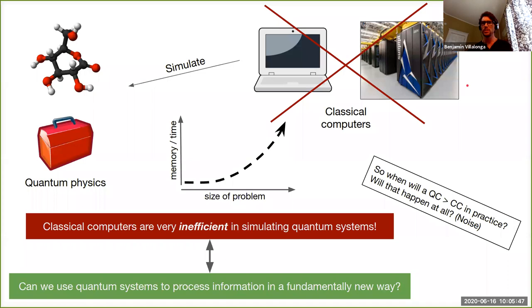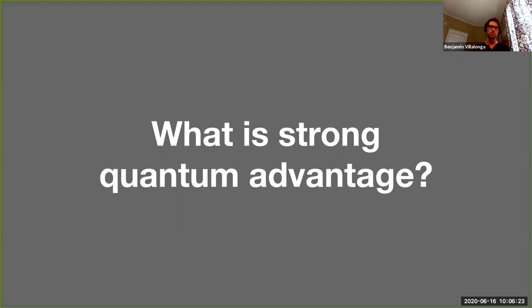Most concerning is whether this will ever happen at all. There is a community of people who think it will be impossible — that the noise nature puts into systems we try to control is so large that we will never be able to process information without errors and will never have useful quantum computation. That's why demonstrating strong quantum advantage is really important, not only as a stepping stone towards a fully scalable error-corrected quantum computer, but also as a proof of principle that quantum computers work.